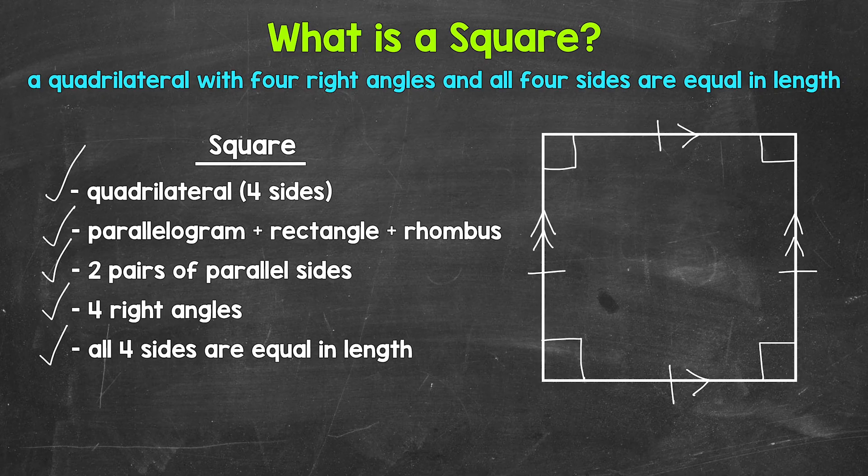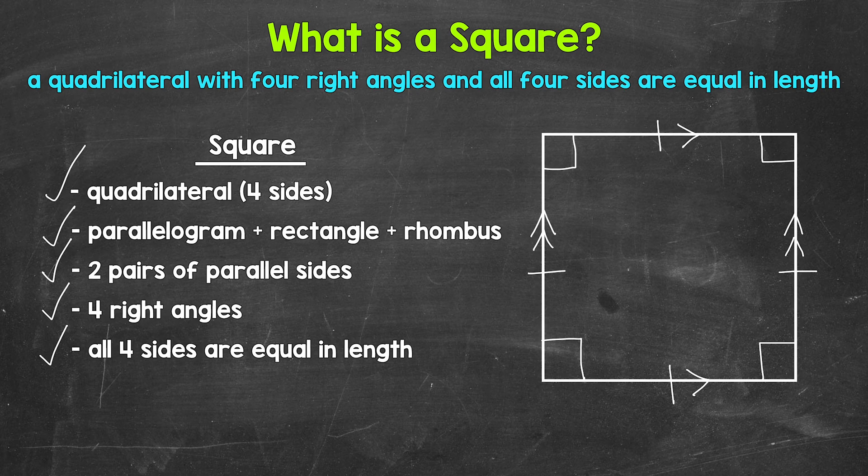So squares have all of these features. Squares are parallelograms. They have two pairs of parallel sides. Squares are rectangles. They have four right angles. And squares are rhombuses. All four sides are equal in length. So there you have it. There's a basic overview of what a square is.